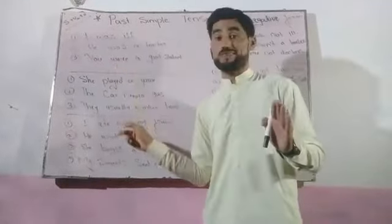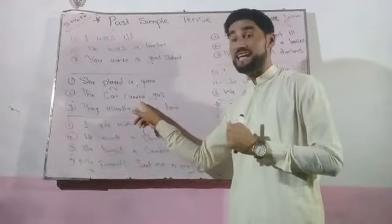Now I will talk about regular verbs in the Past Simple Tense. It doesn't matter whether the subject is 'she', 'they', 'we', or 'I' — we just add 'd' or 'ed' at the end of the regular verb. For example: 'She played a game.' The past form of 'play' is 'played' because it's a regular verb — I added 'ed'. Next: 'The car needed gas.' The past form of 'need' is 'needed' — I added 'ed' at the end.